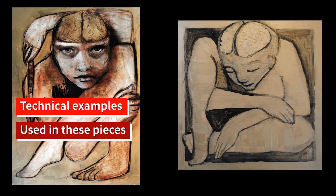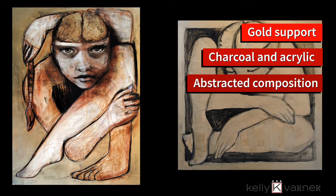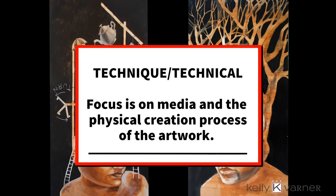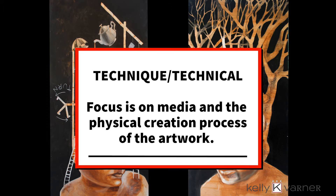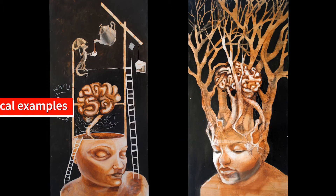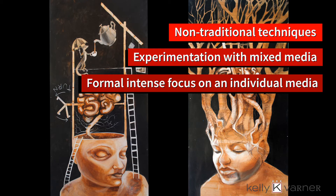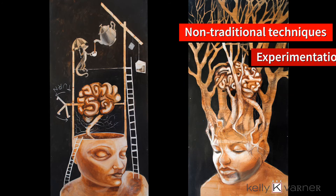The technical examples seen in these two pieces are using a gold support, working with mixed media — in this case charcoal and acrylic — and creating an abstracted composition. A technical series focuses on media and the physical creation process of the artwork. Some technical examples to use in your artwork are non-traditional techniques, experimentation with mixed media, or a formal intense focus on an individual media.